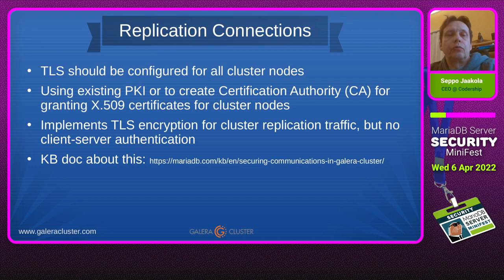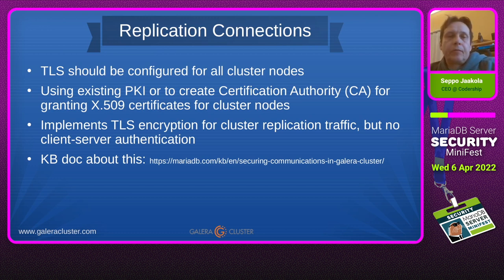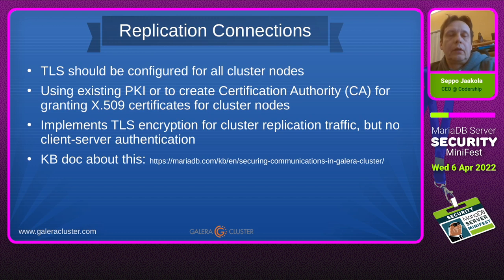For replication connections between nodes, the recommendation is to always use TLS. This is now the default in MariaDB enterprise versions, and will likely come to community as well. Establishing TLS for replication connections is based on X.509 certificates — you need to obtain these certificates for all nodes in the cluster. If you have a private key infrastructure available, you can use a certificate authority from there. If not, you can create a mini CA for the cluster itself and copy that certificate to all cluster nodes. This is a quite common way to configure TLS for Galera clustering.